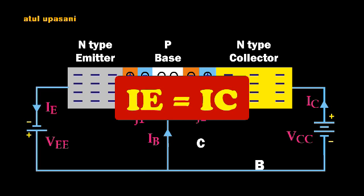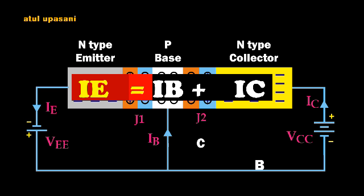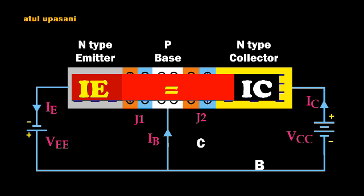Nearly all the emitter current reaches the collector, so the collector current and emitter current are approximately equal. The transistor equation is derived as: emitter current equals base current plus collector current. Since the base current is very small, the emitter current and collector current are nearly the same. This is how the NPN transistor works.